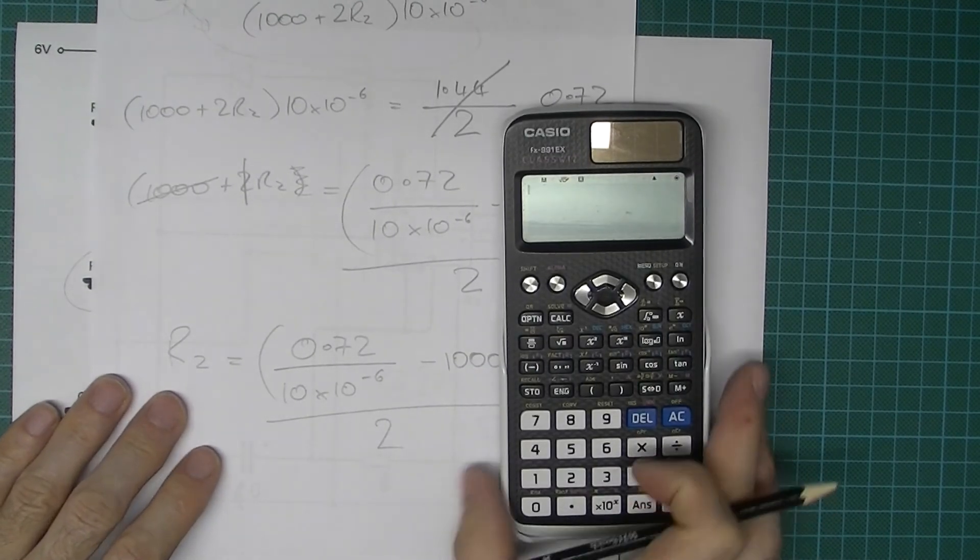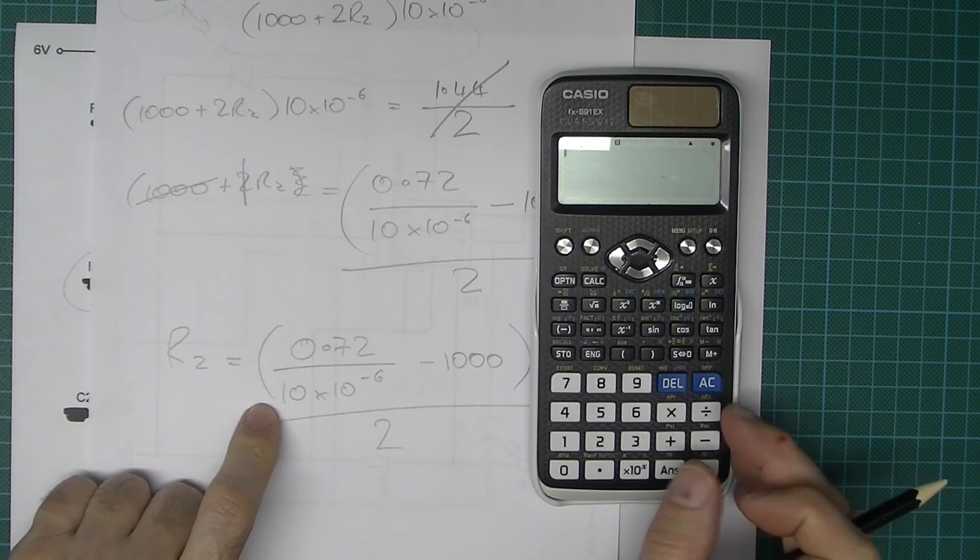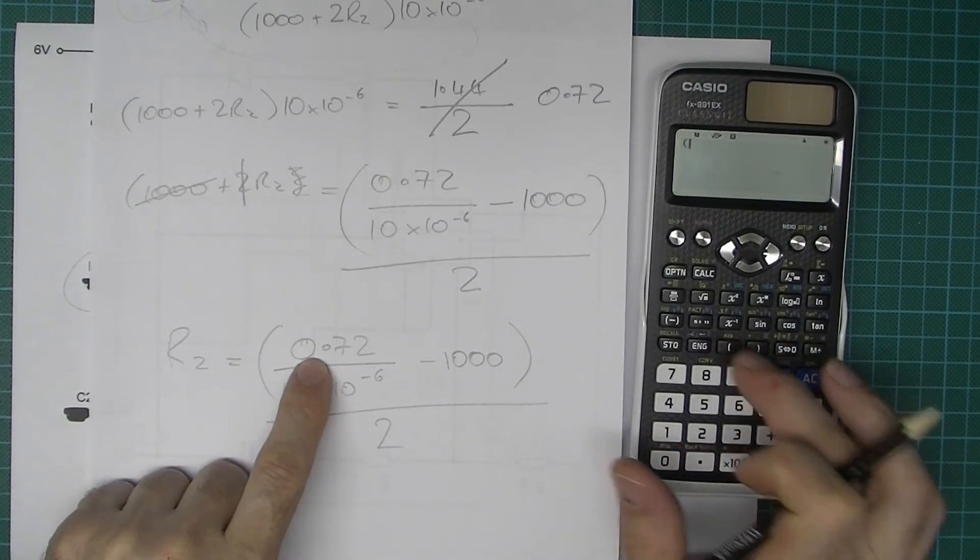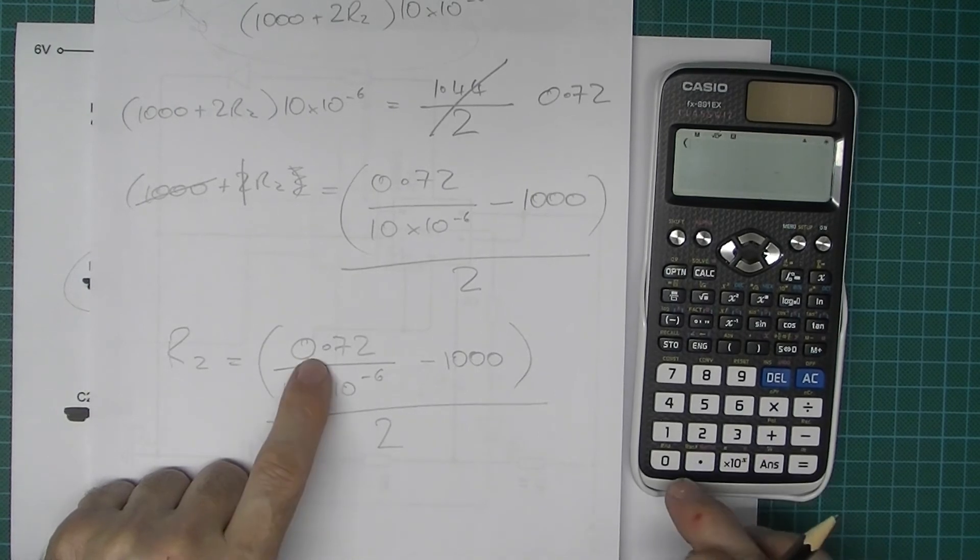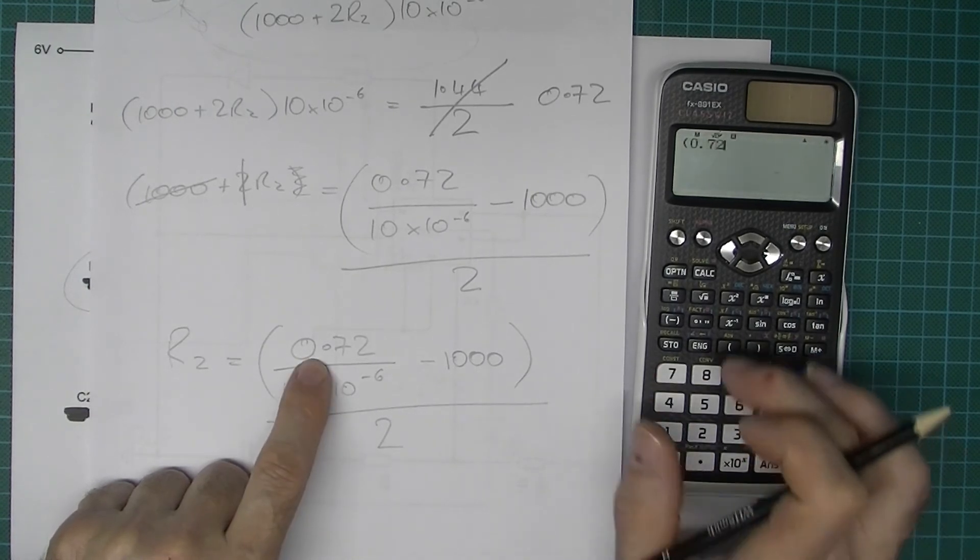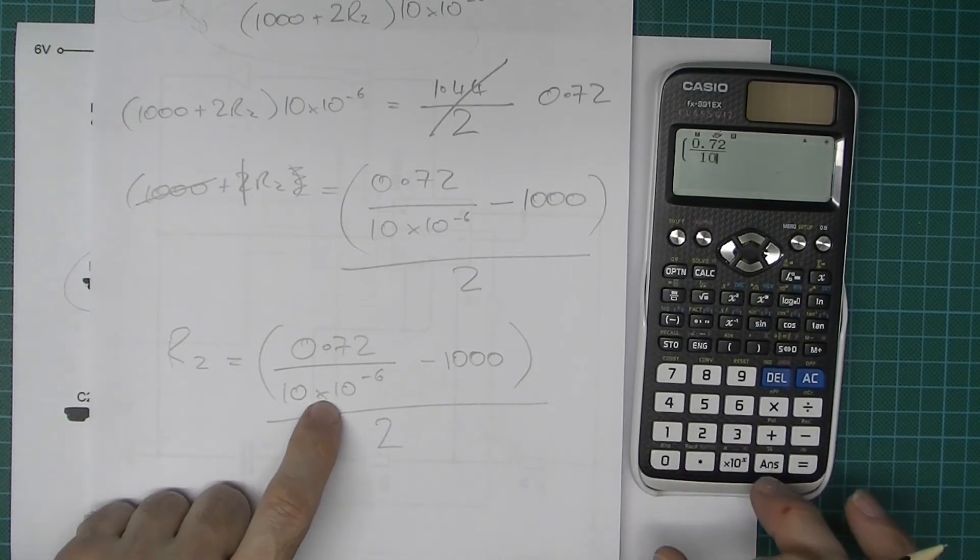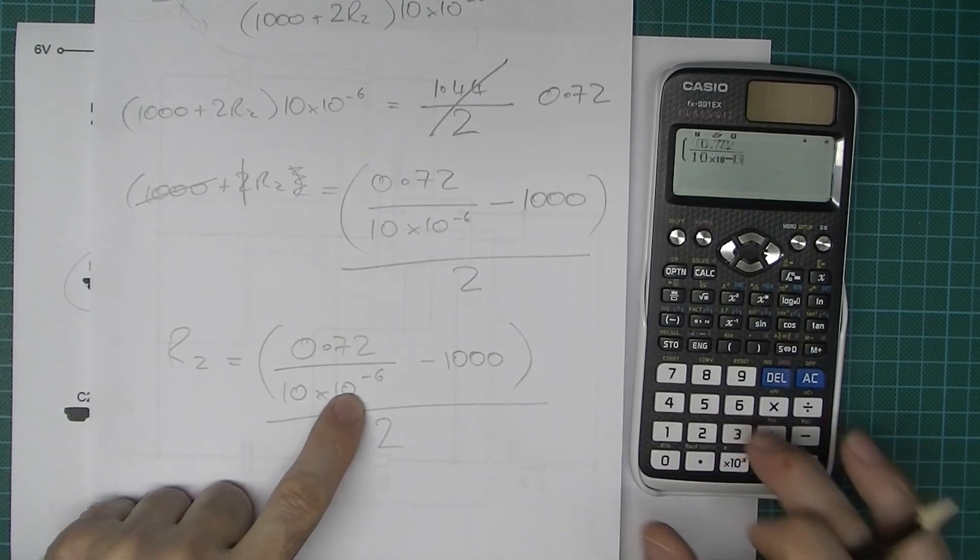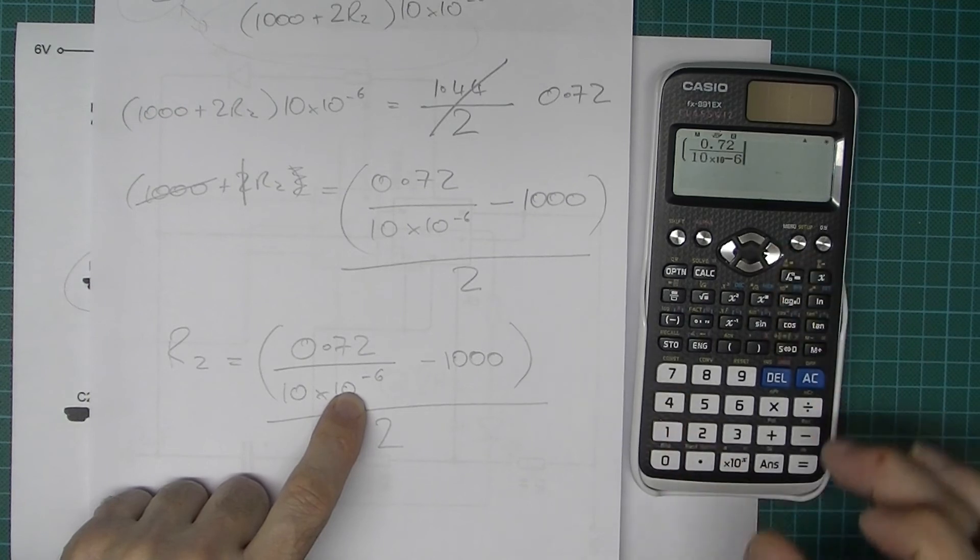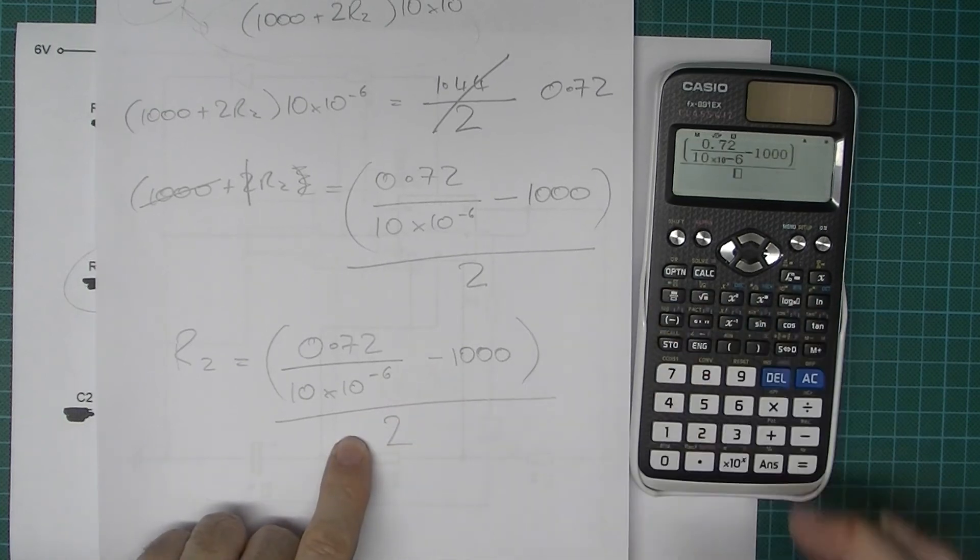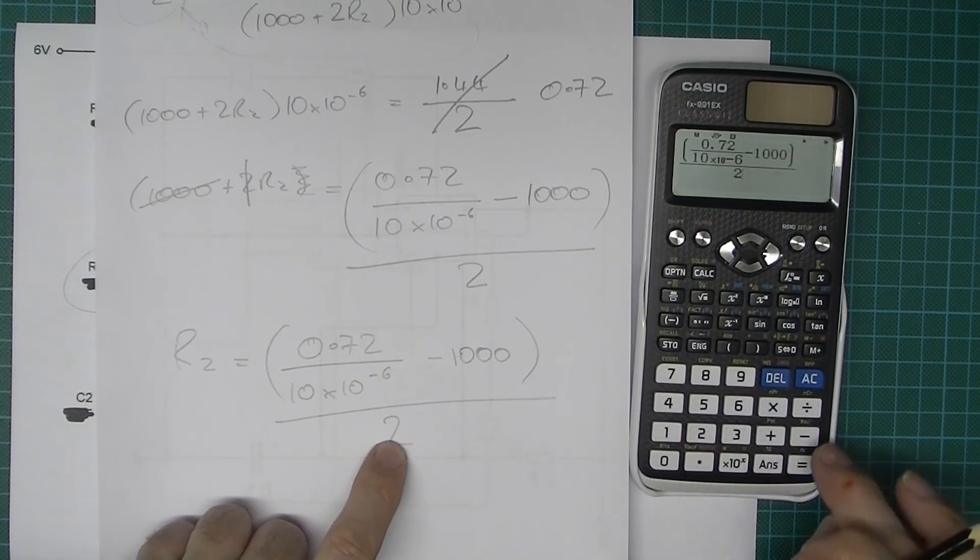So we're ready, so now we can do the calculation. Let's just open the bracket, so 0.72 over 10 times 10 to the minus 6, and I'll just go right there so then I can do the minus 1000 and then I'll close that bracket and then I want to put the whole lot over 2.